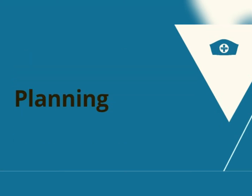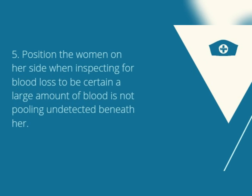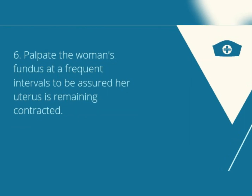For the planning, position the woman on her side when inspecting for blood loss to be certain a large amount of blood is not pooling undetected beneath her. Palpate the woman's fundus at frequent intervals to be assured her uterus is remaining contracted.